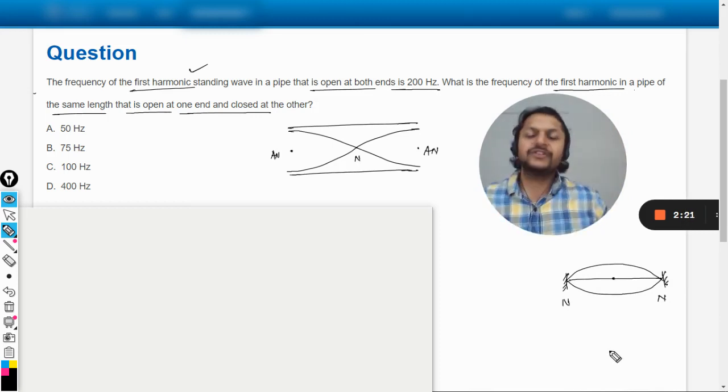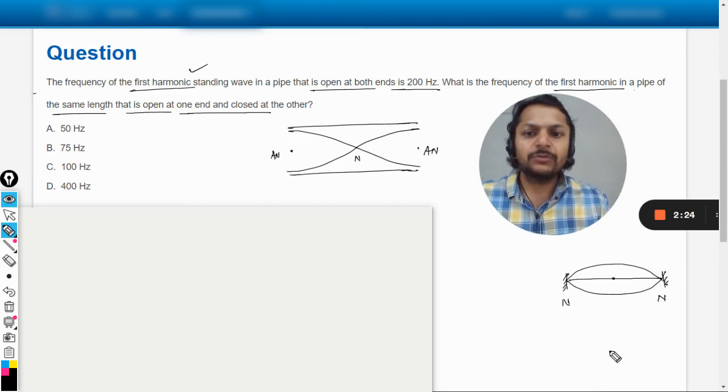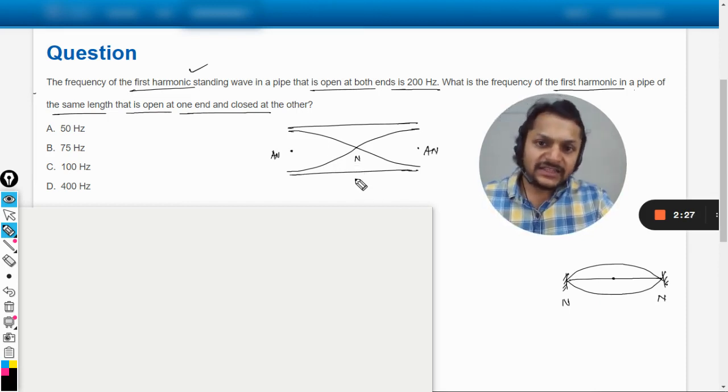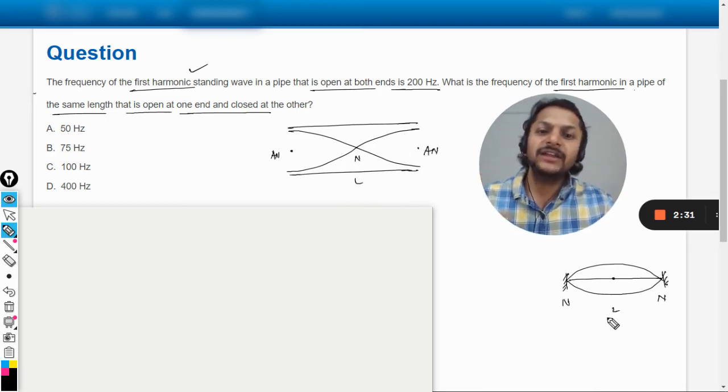Now there are two nodes and one anti-node at the center, at the midpoint of this rope. So this is also first harmonic and that one is also first harmonic. So we can see that the length of the pipe is technically equal to lambda by 2 in both of the cases, that L is equal to wavelength by 2.